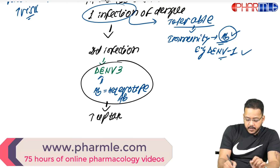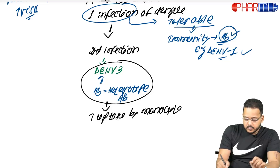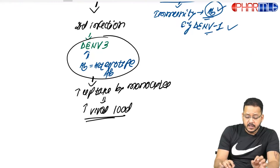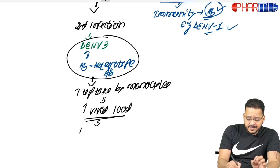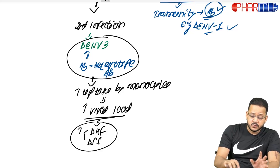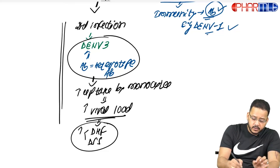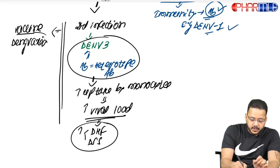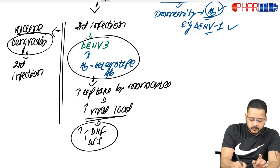These heterotypic antibodies attacking DENV3 result in increased uptake by monocytes and a higher viral load in the patient. This significantly increases the risk of dengue hemorrhagic fever or dengue shock syndrome. So severe disease risk is much higher in the second infection.